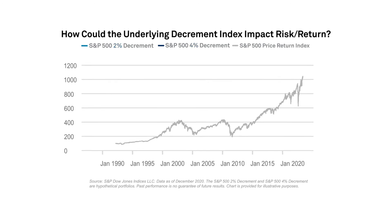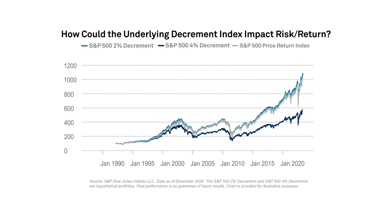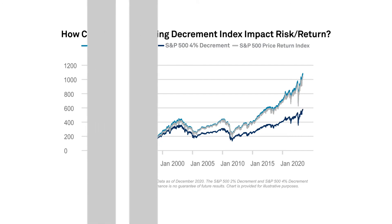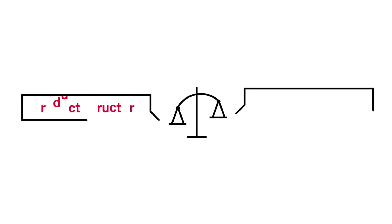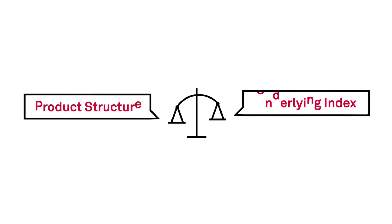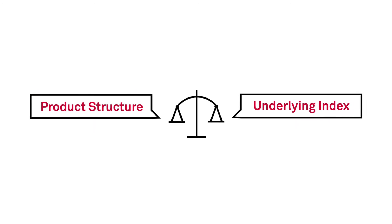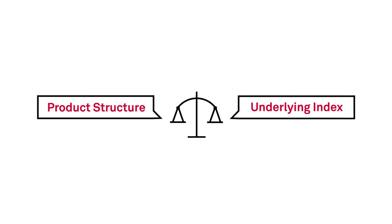With a historical dividend yield of roughly 2% for the S&P 500, the 2% decrement version tracked closely with the price return of the benchmark, while the 4% decrement version consistently underperformed. Our hypothetical example underscores the importance of selecting an underlying index that aligns with the market conditions the structured product is designed to address.